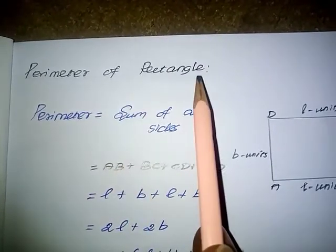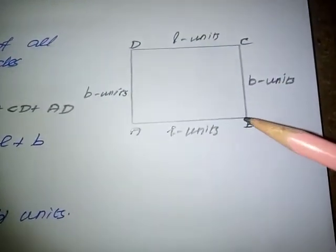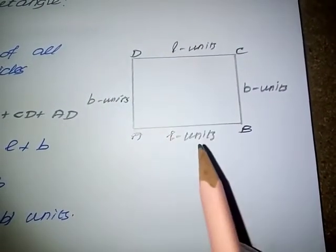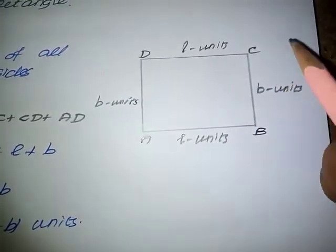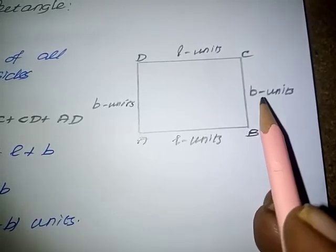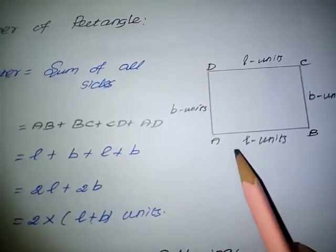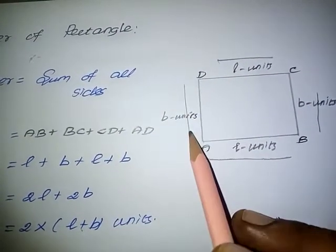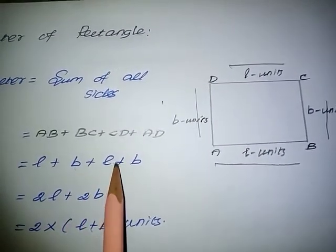Perimeter of rectangle. Perimeter equals the sum of all sides. In a rectangle, AB and DC are called the length, which we take as L units. BC and AD are called the breadth, which we take as B units. So, perimeter equals AB plus BC plus CD plus DA, which gives L plus B plus L plus B.